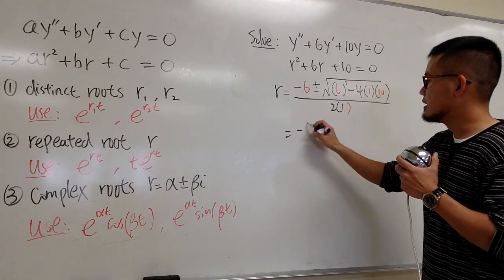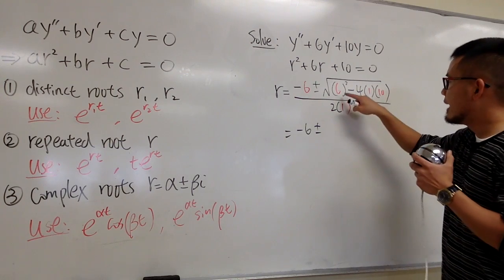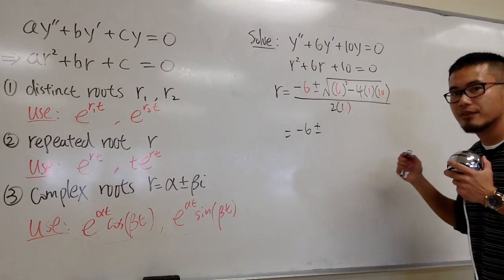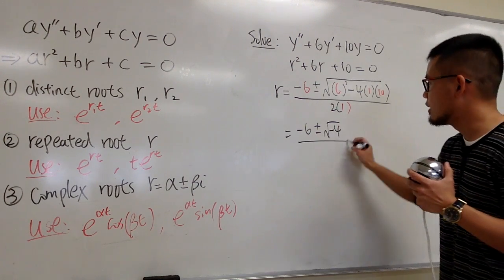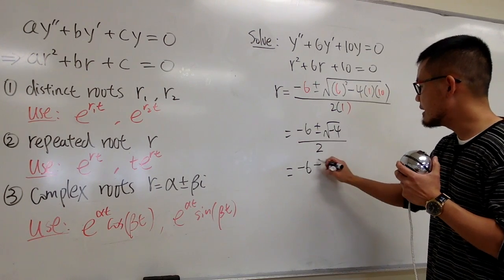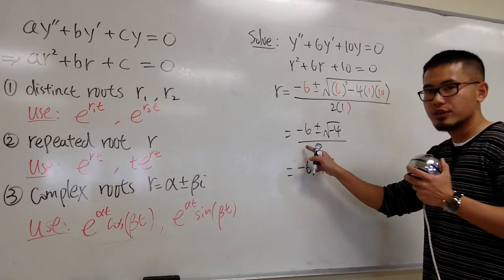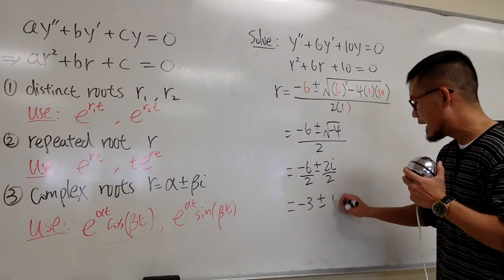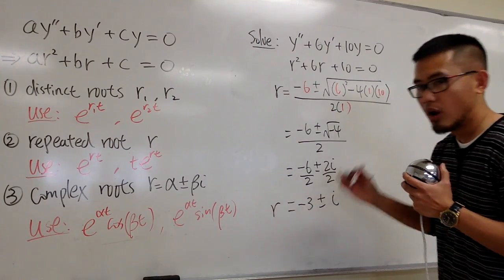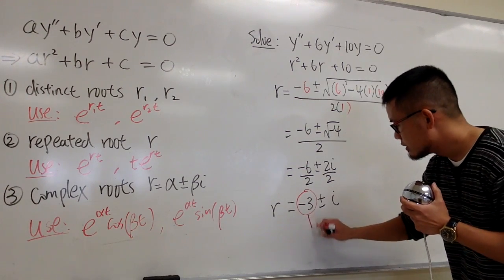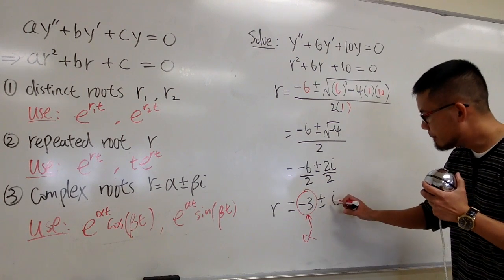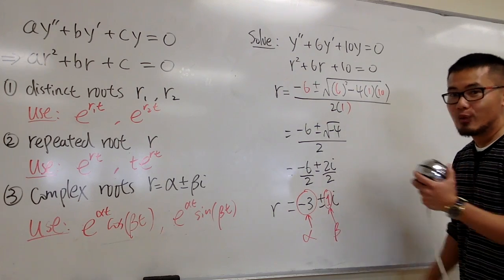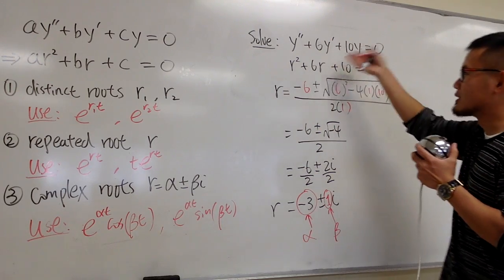So we have r = (−6 ± √(−4)) / 2. The square root of −4 gives us 2i, so r = (−6 ± 2i) / 2. Splitting the fraction, this simplifies to r = −3 ± i. This is our complex r value. Alpha is −3 and beta — the coefficient of i — is 1.